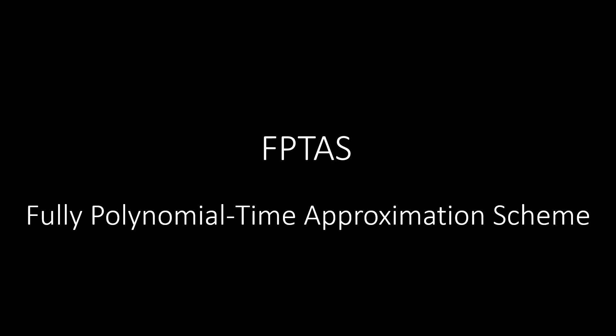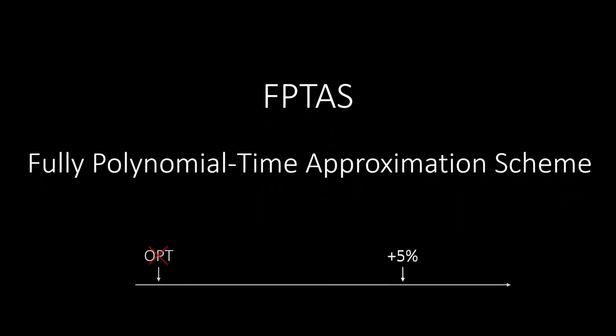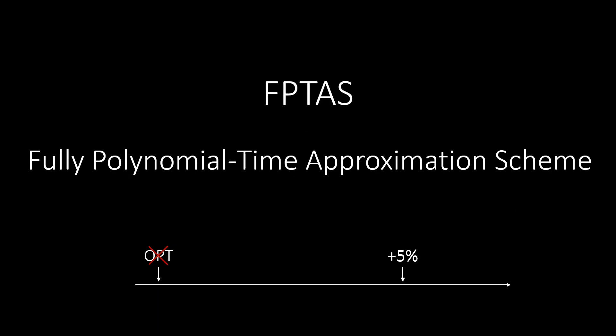An FPTAS allows finding approximate solutions to problems that are difficult to solve optimally. For instance, we can find solutions which are at most 5% worse than the optimal solution. And it gets even better. An FPTAS allows for finding approximate solutions arbitrarily close to the optimal solution. So for example, only 1% worse than the optimal solution. And we can choose this percentage as small as we want.